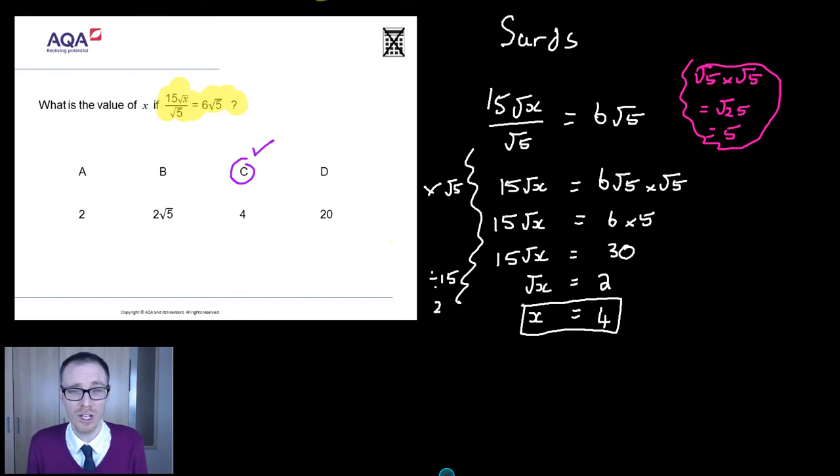But before you think you're disappearing, the fun is just getting started, because we learn so much from looking at where each of the wrong answers come from. What about answer A, 2? Well, I reckon this comes from this line here. Students could have got everything right and then got √x equals 2 and then just finished there. But it's not √x. We want what x is. X equals 2. So, just be careful with that one.